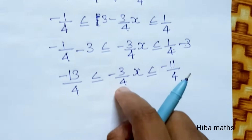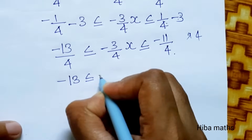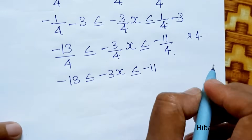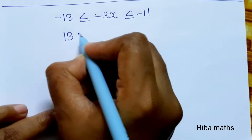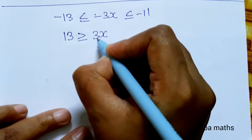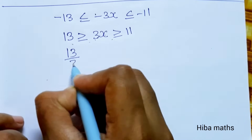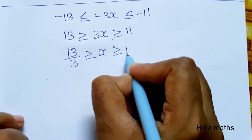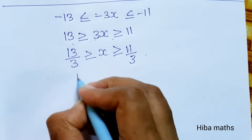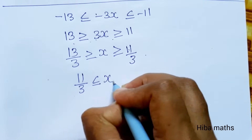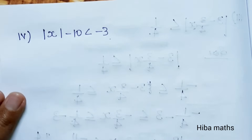Now divide all parts by minus 3 by 4. Dividing by a negative flips the inequality signs. After cancellation, we get the x value with sign changes applied throughout. This gives the solution for subdivision 3.